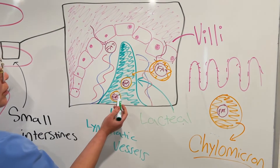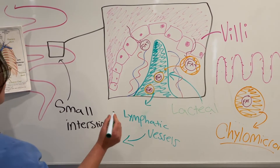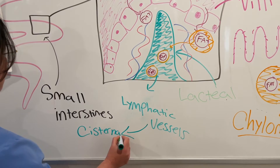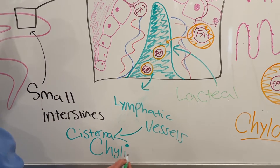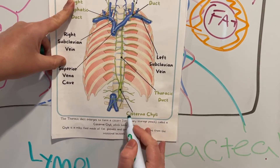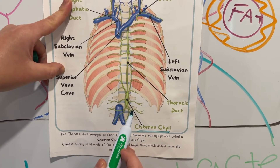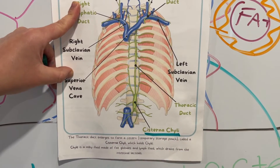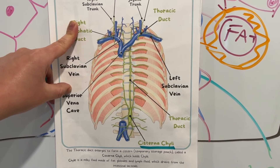After fat is absorbed by the lacteals, it goes into lymphatic vessels and eventually leads to your cisterna chyli. The cisterna chyli empties out into the thoracic duct. Cisterna chyli holds chyle, which is a milky fluid made of fat globules and lymph fluid.